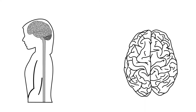Familiarity with the terminology used to describe location and relationships within the nervous system is critical as we move forward into examining brain systems. Directional terms are used to locate one structure, usually in relation to another structure.